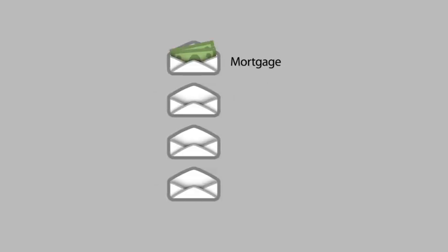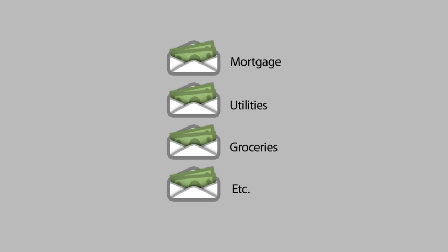You'll assign a responsibility to each portion of that cash by putting it into envelopes earmarked for particular expenses, such as rent or mortgage, utilities, groceries, etc. The advantage of this approach is that you can see at a glance whether you have enough money to pay the bills. If there's extra cash at the end of the month, you can easily move it to another envelope or save it towards a future expense.